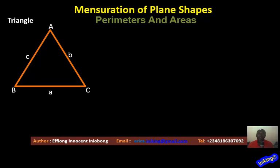You're looking at the perimeter of a triangle. What do we mean by the perimeter of a triangle? The perimeter of any plane shape simply means the total boundary length.